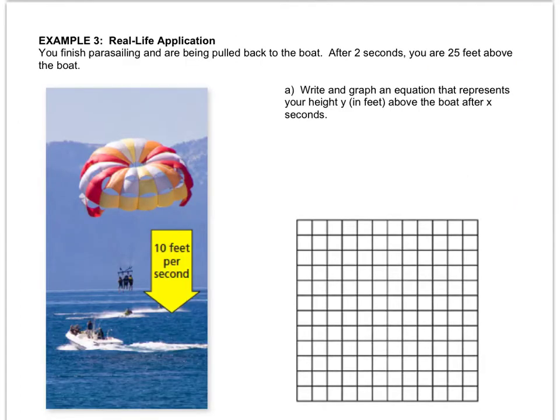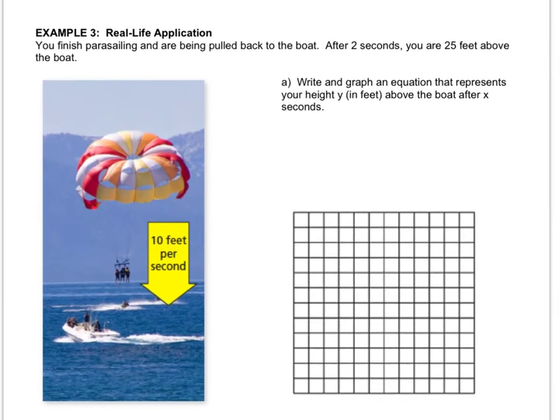Last one together. You've finished parasailing and are being pulled back to the boat. After 2 seconds, you are 25 feet above the boat. And we have to write and graph an equation that represents my height above the boat after x seconds. So I need the slope, and I need a point. Well, if they tell me that x represents seconds and y represents my height in feet, so 2 represents x1, and 25 represents y1, because y represents feet and x represents seconds.